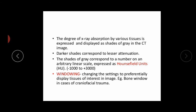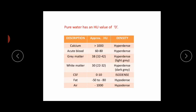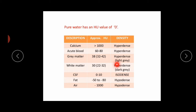Some Hounsfield unit values for different materials: calcium is greater than 1000, which is hyperdense. Acute blood is between 60 and 80, also hyperdense. Gray matter is approximately 38, hyperdense but light gray. White matter is around 30, hyperdense and dark gray. CSF is 0 to 10, which is isodense. Fat is minus 50 to minus 80, and air is minus 1000, which appears darkest.